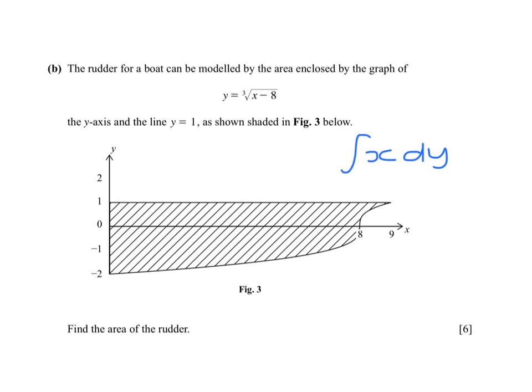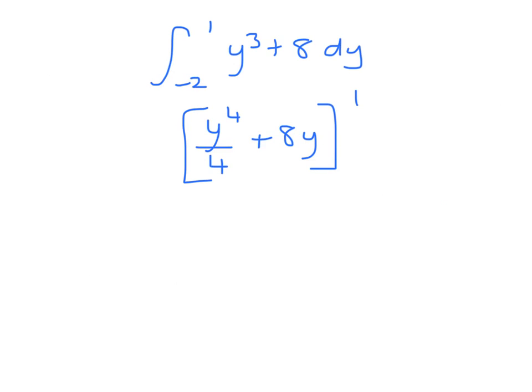So the first thing I need to do is rewrite this equation. So y cubed equals x minus 8. x would equal y cubed plus 8. So I'm integrating from minus 2 to 1, y cubed plus 8 with respect to y. So y to the 4 over 4 plus 8y, 1 to minus 2.